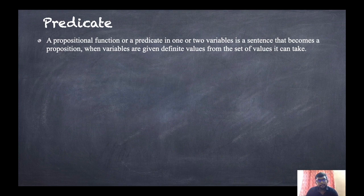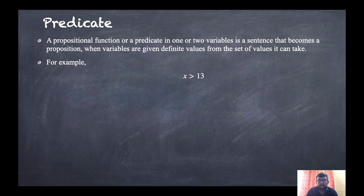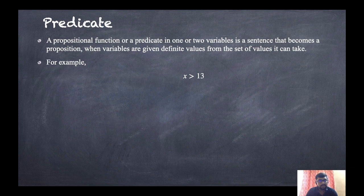A propositional function or predicate becomes a proposition — meaning whenever we give some values, it has a truth value. For example, 'x is greater than 13' is not a proposition as x is undefined. But whenever we put a value of x, like x equals 14, then '14 is greater than 13' becomes a proposition and it is a true statement.